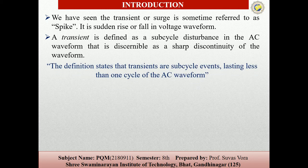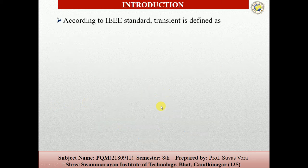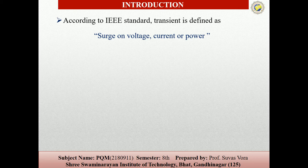The definition states that transients are sub-cycle events which last less than one half cycle of the AC waveforms. You can see here the voltage spike or the transient. According to the IEEE standard, the surge on the voltage, current and power is called the transient.